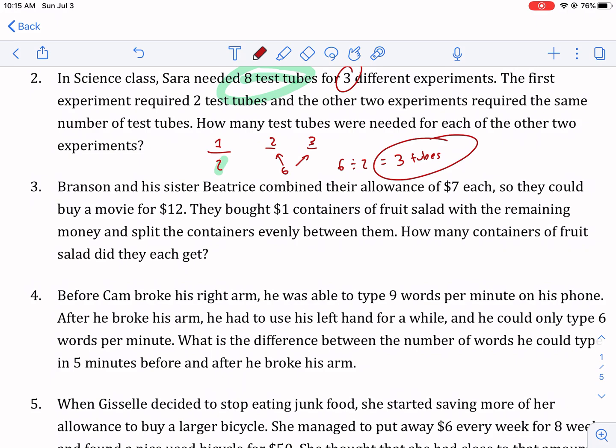Branson and his sister Beatrice combined their allowance $7 each so they could buy a movie for $12. They bought $1 containers of fruit salad. Good choice. Healthy snack instead of candy with the remaining money and split the containers evenly between them. How many containers of fruit salad did they each get? So first off, they're going to combine their allowance of $7. So that's 7 plus 7. That's $14 available to spend.